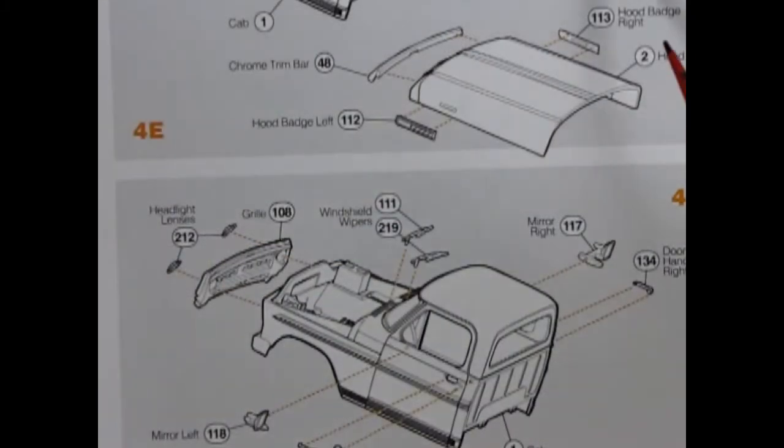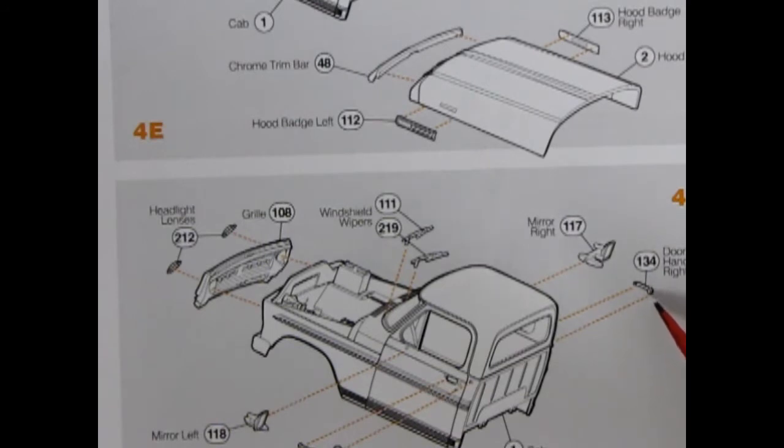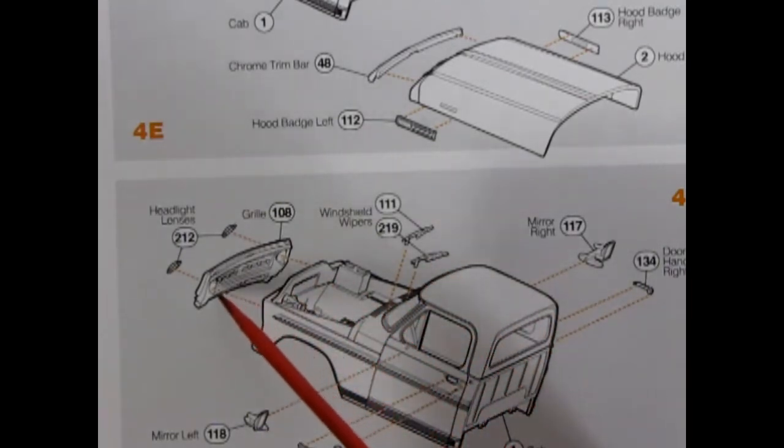For our hood we have right and left hand side hood badges as well as a chrome trim bar. Then we finalize the cab by gluing on our door handles, right and left, our gas cap, our right and left rear view mirrors, windshield wipers, and grille with the two headlight lenses.